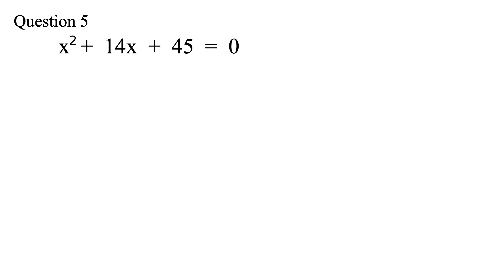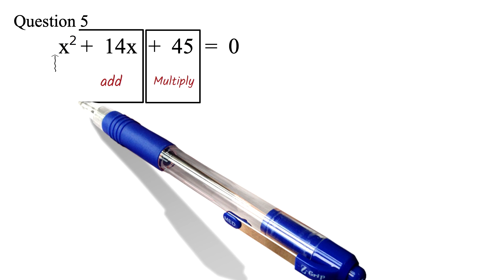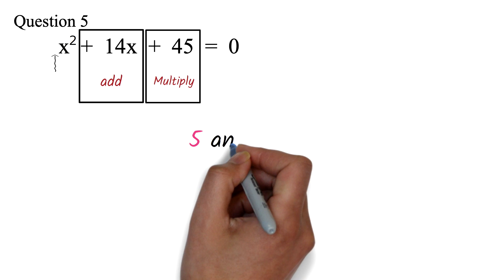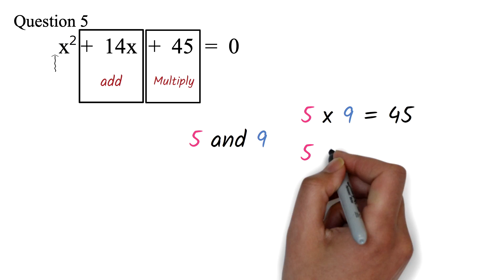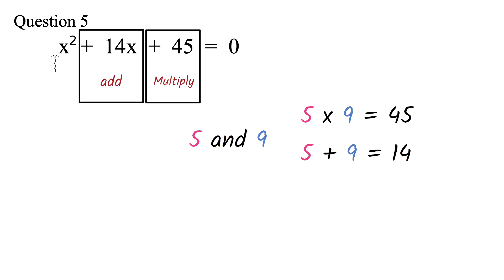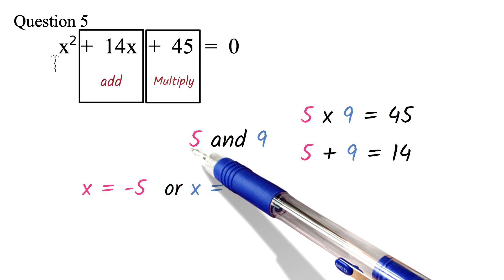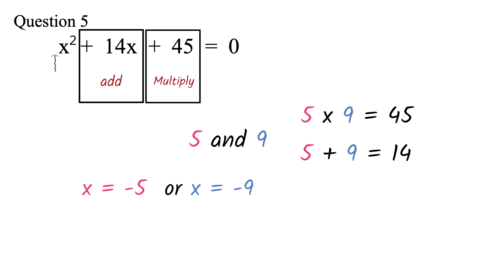Question 5: Solve x squared plus 14x plus 45 equals 0. In this question we have a trinomial. There is no number in front of the x squared, meaning the coefficient of x squared is 1. When you have a case like this, find 2 numbers that multiply to get the constant 45 and also add to get the coefficient of x, which is 14. The 2 numbers are 5 and 9: 5 times 9 equals 45 and 5 plus 9 is 14. For this kind of question, the x values are opposite the values you got, so x equals negative 5 or x equals negative 9. If you want a detailed explanation, please let us know.